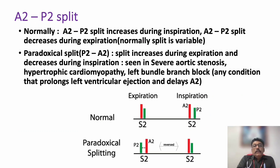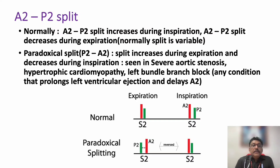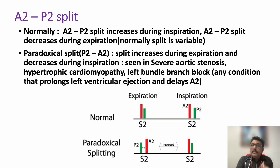In aortic stenosis there is paradoxical splitting of A2-P2 — A2 occurs even after P2, which is a reversal of normal splitting. This paradoxical split is also seen in severe aortic stenosis, hypertrophic cardiomyopathy, and left bundle branch block. The ejection systolic murmur and soft A2 are the most classical auscultatory findings in aortic stenosis.